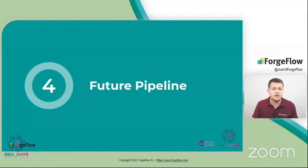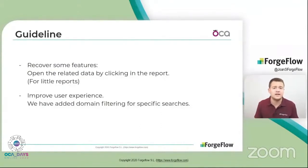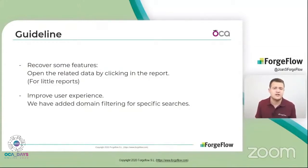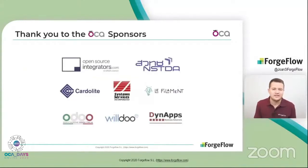As future work for the next versions, we could recover the function that made related data open when clicking on different items in the report — something we had to remove because it caused the system to collapse on very large reports. Perhaps for version 14 it will be possible to recover it, or at least have both options available so you can choose when working with smaller reports. We could also continue adding new features to improve the user experience, such as the domain filter we added to make more specific searches. All pull requests with new improvements are welcome in the OCA.